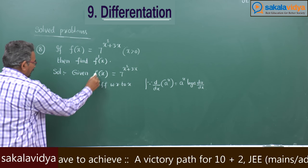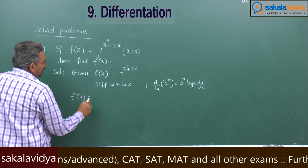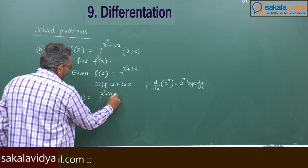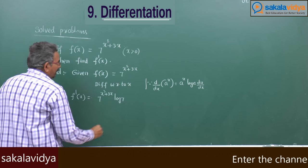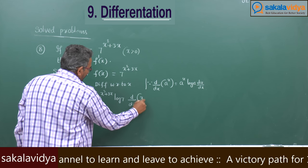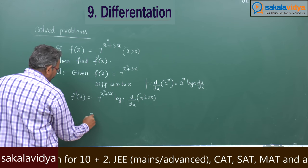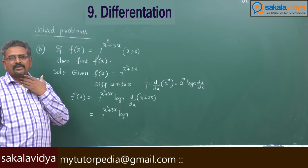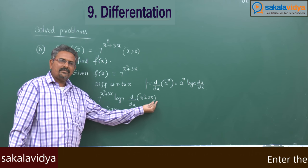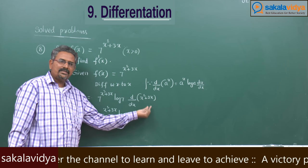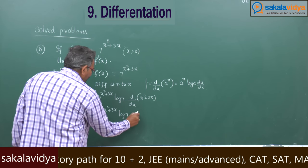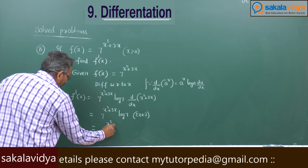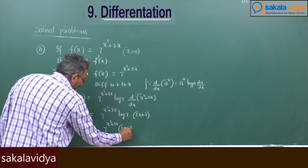So f dash x equals 7 to the power of x squared plus 3x, differentiation gives 7 to the power of x squared plus 3x times log 7, times d by dx of x squared plus 3x. Using the u plus v rule, the differentiation of x squared plus 3x is 2x plus 3. So the result is 7 to the power of x squared plus 3x times (2x plus 3) times log 7.